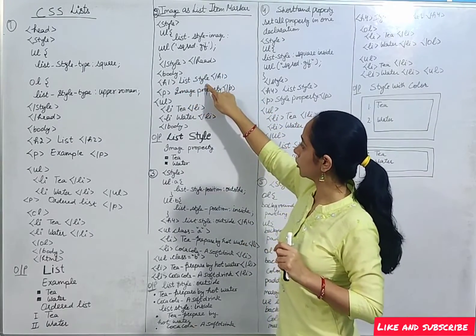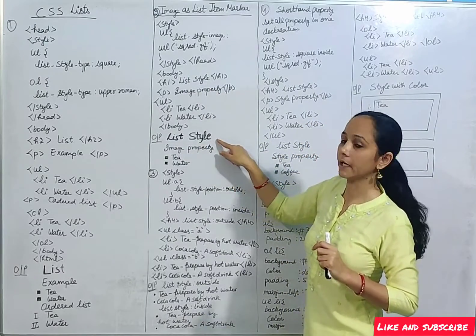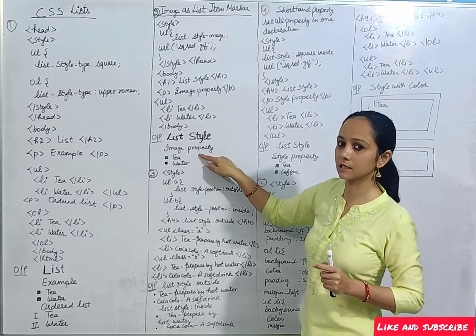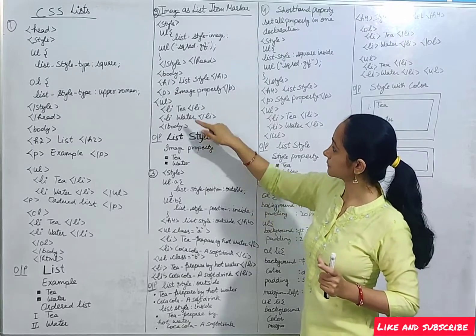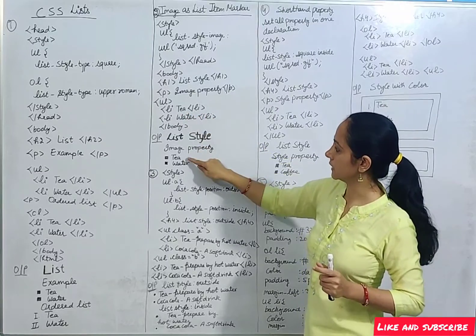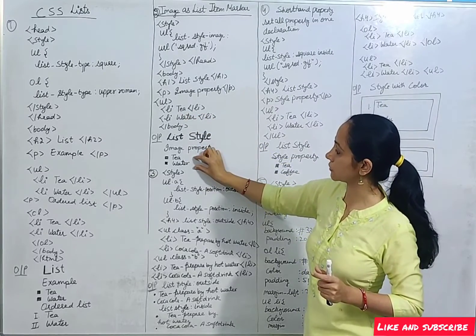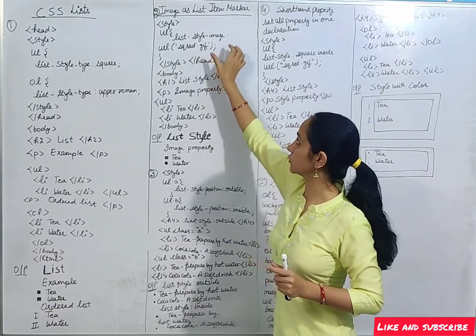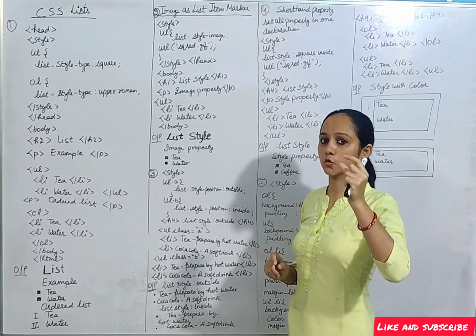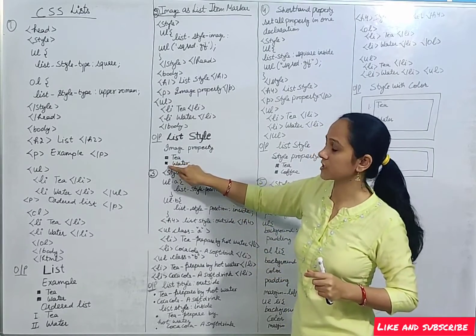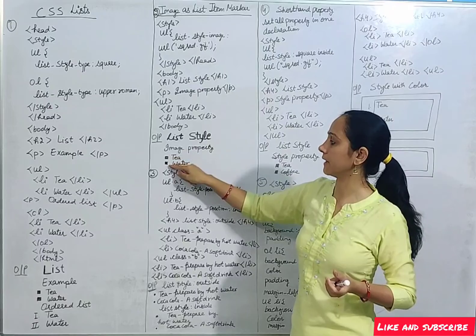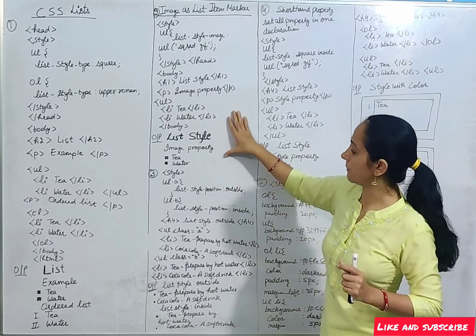In the body part, there is a list style paragraph discussing the image property. The content of the unordered list is tea and water, but its bullet style will be a square red image. So there will be small red squares in your bullet form. If you use another image, it will reflect on the content accordingly.